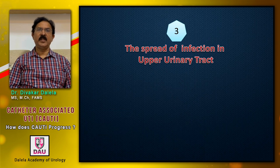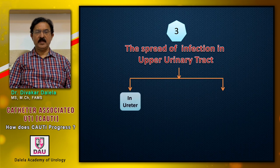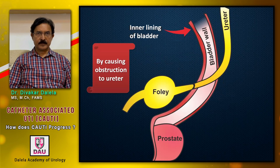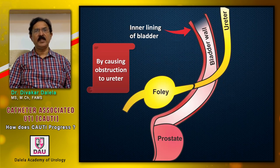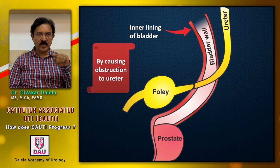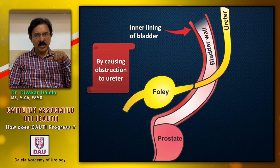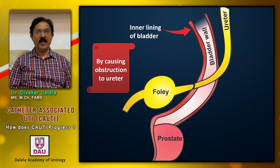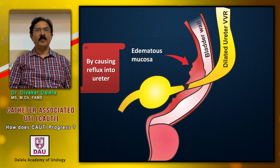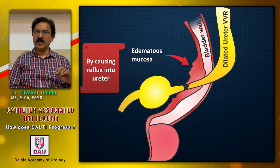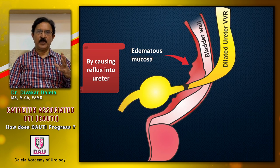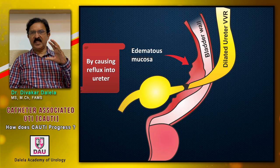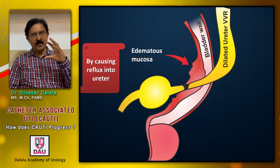The third is spread of infection in the upper urinary tract — into the ureters and kidneys. One reason infection occurs in the ureter is that in some patients the tip of the Foley catheter can directly block the ureteric orifice. I have seen it intussuscepting into the ureteric orifice and obturating it, resulting in obstructed drainage of the ureter and infection in that ureter. More commonly, the tip irritates the orifice and the mucosa around the ureteric orifice becomes edematous, and the compliance — the ability of the ureteric orifice to open and close — becomes slow and tardy.